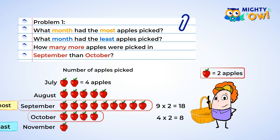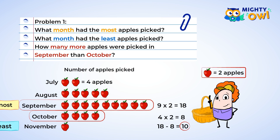Getting back to the question — how many more apples were picked in September than in October — we know that 'how many more' indicates that we want to subtract. So 18 subtract 8 is 10. Ten more apples were picked in September than in October. Great work on that picture graph. Now let's try a bar graph.